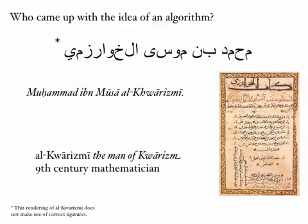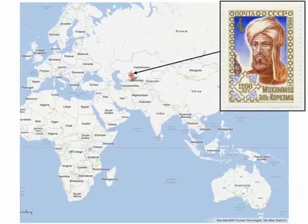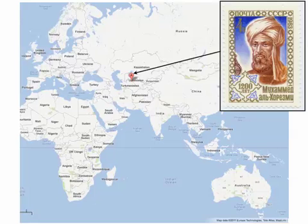Over on the right, you can see an image taken from one of the manuscripts he wrote on algebra. Al-Khwarizmi lived in what's now Uzbekistan, and here you can see a picture of him on a postage stamp.